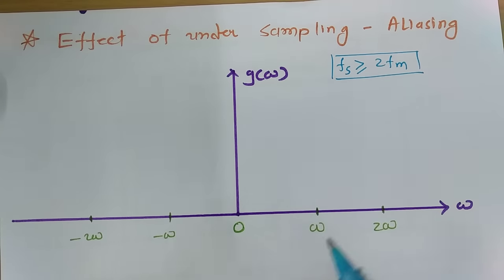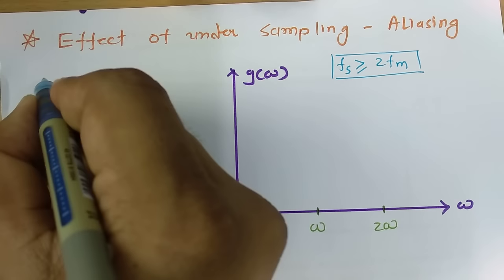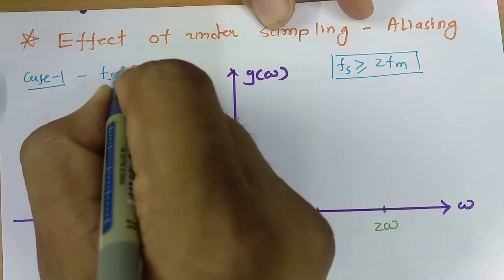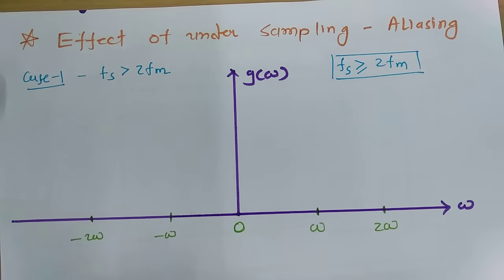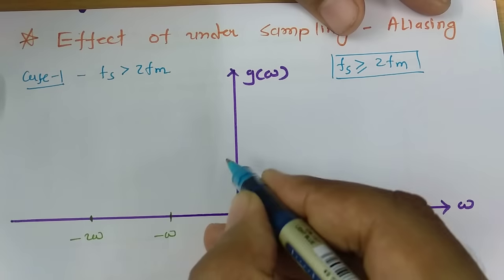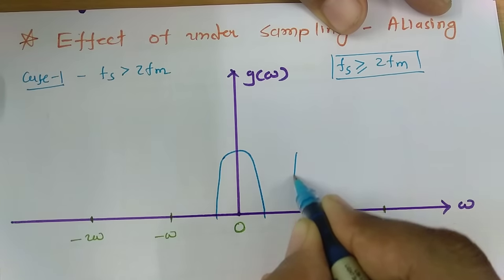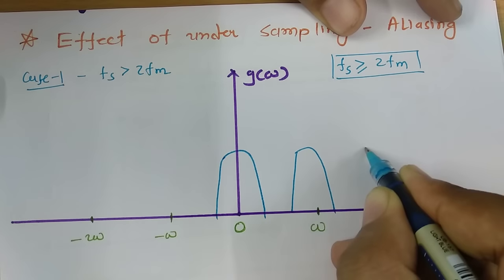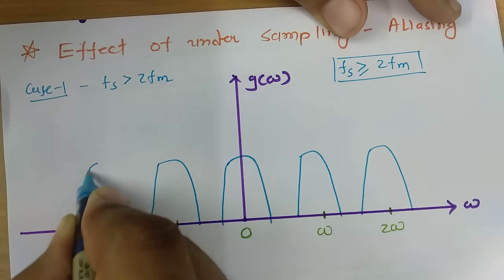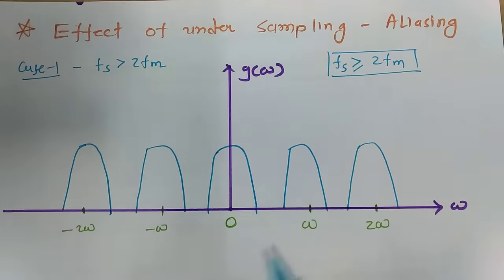To understand this, we need to look at three different cases. Case 1: what if fs is greater than 2fm? If fs is greater than 2fm, this is called oversampling. For this signal response, you will find there is no overlapping of responses. This is how the response will look when fs is greater than 2fm.